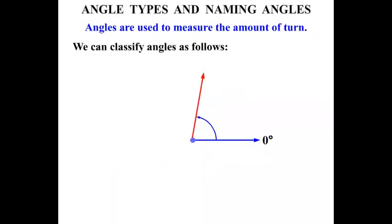Now once we get towards 90 degrees, that angle there pointing straight up is known as a Right Angle. It's 90 degrees exactly, and it's marked with a little square.